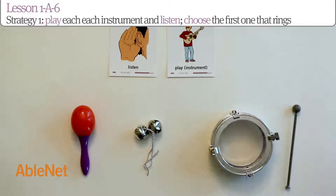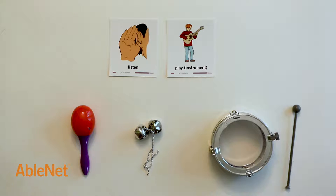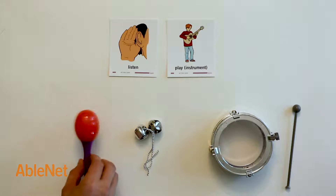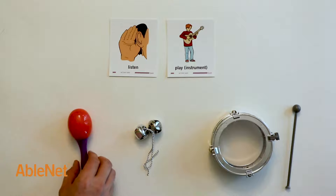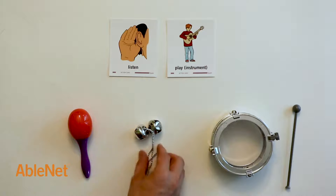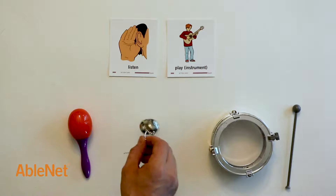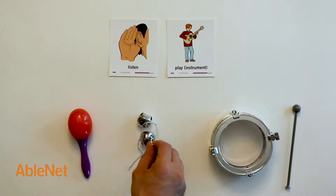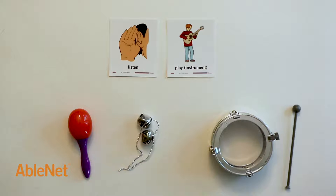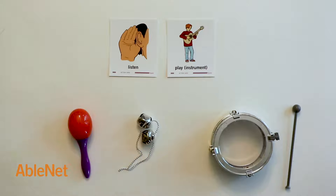I need to decide which instrument she should use. I'm going to play each instrument and listen, and then I'm going to choose the one that rings. After hearing the bells, I know that's the instrument that rings.